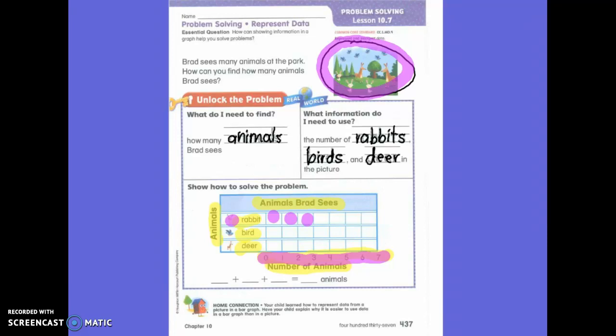Okay. Now what are we doing? We're going to count the deer. Okay, you're going to have to count the deer. So it's wanting to know how many animals Brad sees. So we've organized our charts to see what animals he saw.